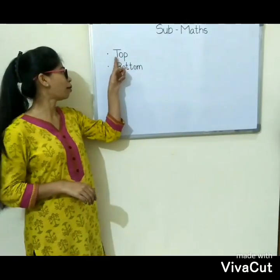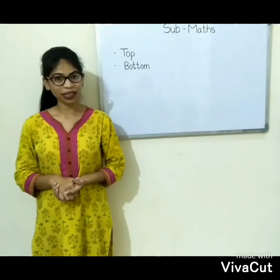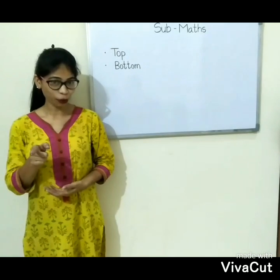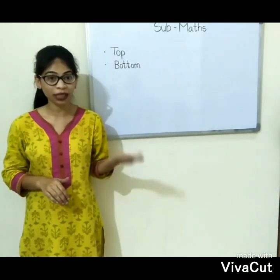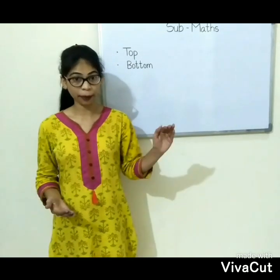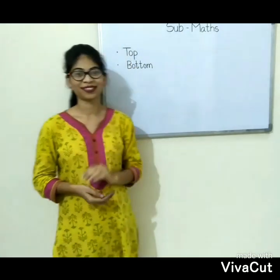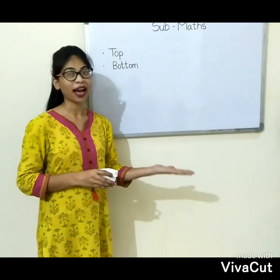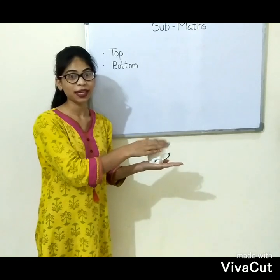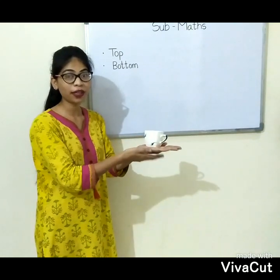Now we will learn about the top and bottom. What do you mean by top? Top means the position where something is placed above the ground. You know what is the ground? Ground means land. We stand on the ground. Something which is kept at some height above the surface is called top. For example, this is my hand and I kept the cup on my hand. I can say the cup is kept on the top of my hand. Why? Because it is kept above the hand.